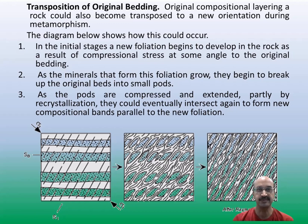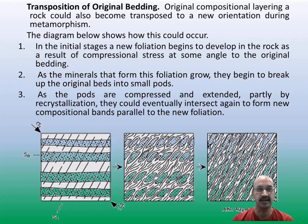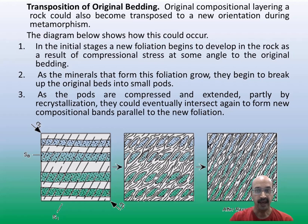Another mechanism is transposition of original bedding. The original bedding gets transposed, as seen in this slide. In the initial stage, a new foliation begins to develop in the rock as a result of compression stress at some angle to the original bedding. When the minerals grow along this foliation, they begin to break up from the original beds into small parts. These parts are compressed and extended through recrystallization, and they eventually intersect again to form a new compositional band parallel to the new foliation, giving rise to metamorphic differentiation by transposition of original bedding.